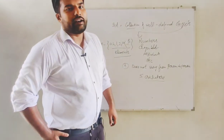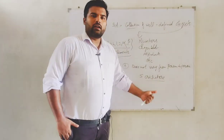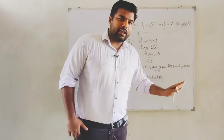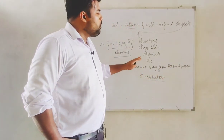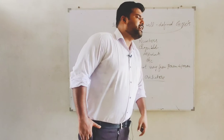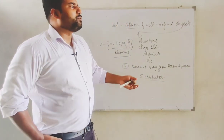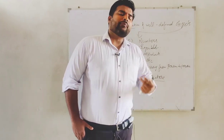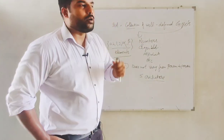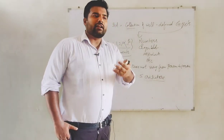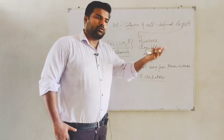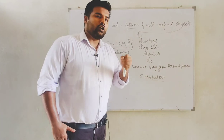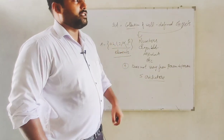Because the answer varies from person to person, it cannot form a set. If I name five cricketers and you name two different cricketers, the result is different for each person. So, we will not be able to make this a set, because a set must not vary from person to person.